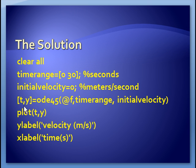And then I say [t,y] is ODE45 of, and now it's at times the name of the function, which I call f.m. So at f and the time range and the initial velocity. So I could put these variables directly in the call, but I prefer to set them up as a separate variable in case I want to change them later.